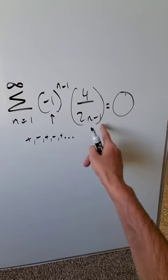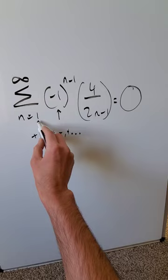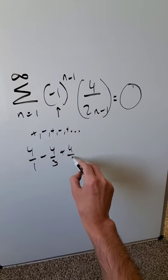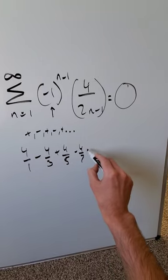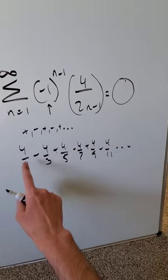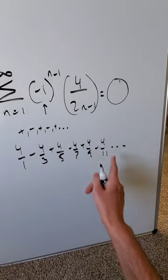When you bring the 4 divided by 2n minus 1 and start from n equals 1, look what you get: 4 over 1 minus 4 over 3 plus 4 over 5 minus 4 over 7 plus 4 over 9 minus 4 over 11, on and on. You're seeing the alternating series in terms of the positive and the negative.